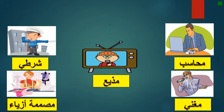Now, after knowing the meaning of these words and jobs, we need to try to make sentences and use them. For example, the job of raiz — raiz means president. We can say: ana ufadil mahinat al-rayiz — that means I prefer the president job.